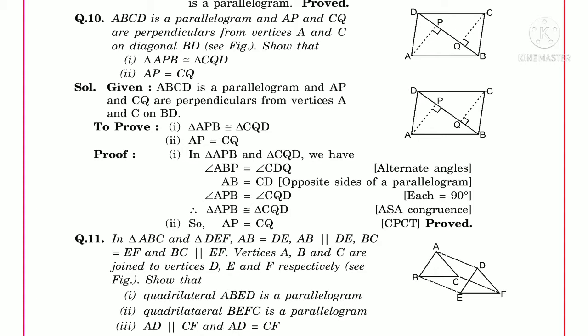Now, how can we prove this? First of all, consider triangle APB and the second triangle CQD. As you see in the figure, in both triangles, AB is parallel to CD and BD is the transversal, so we can write the following.